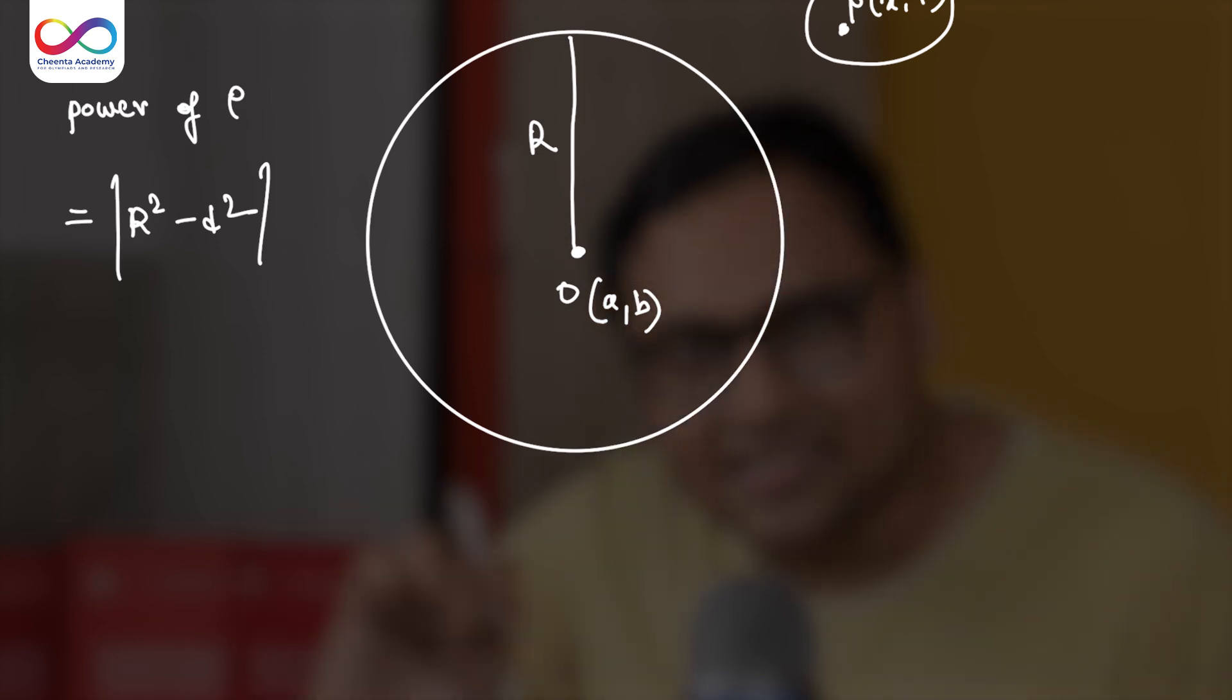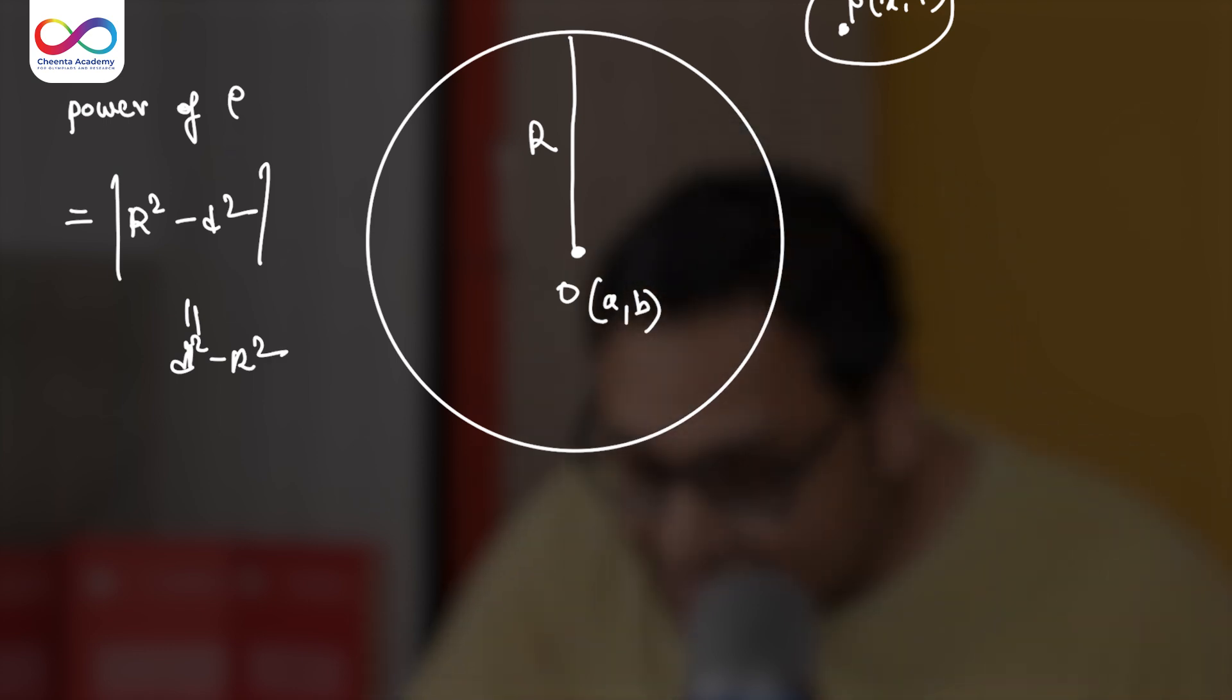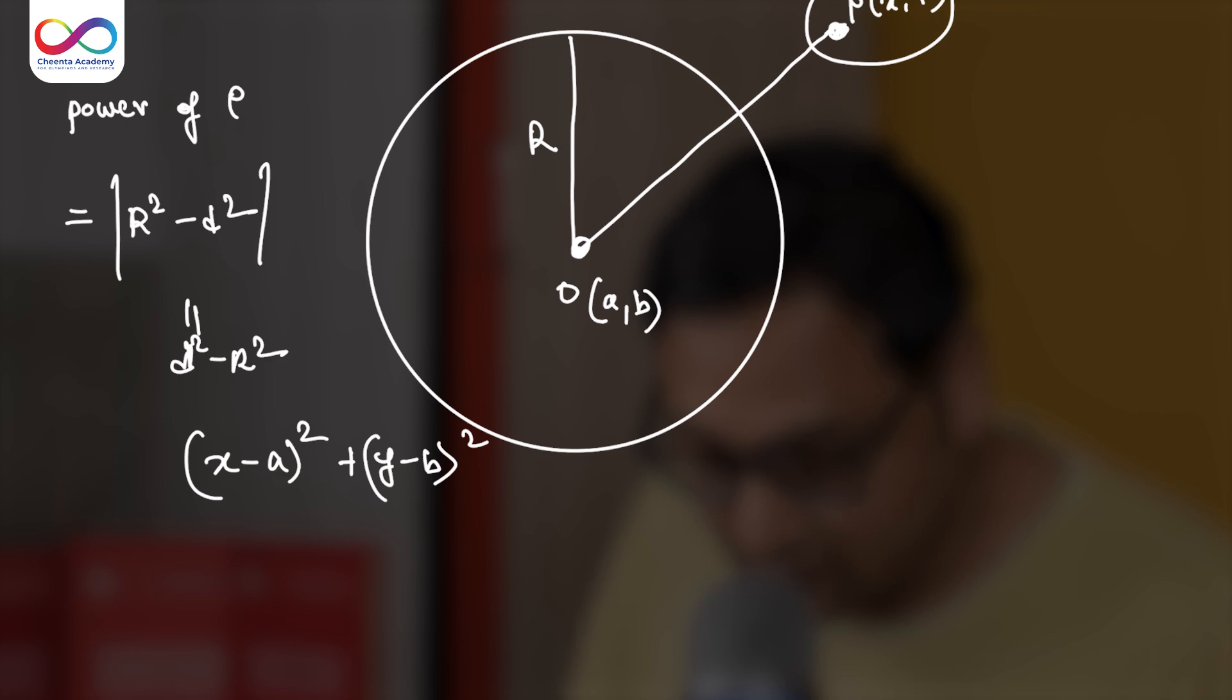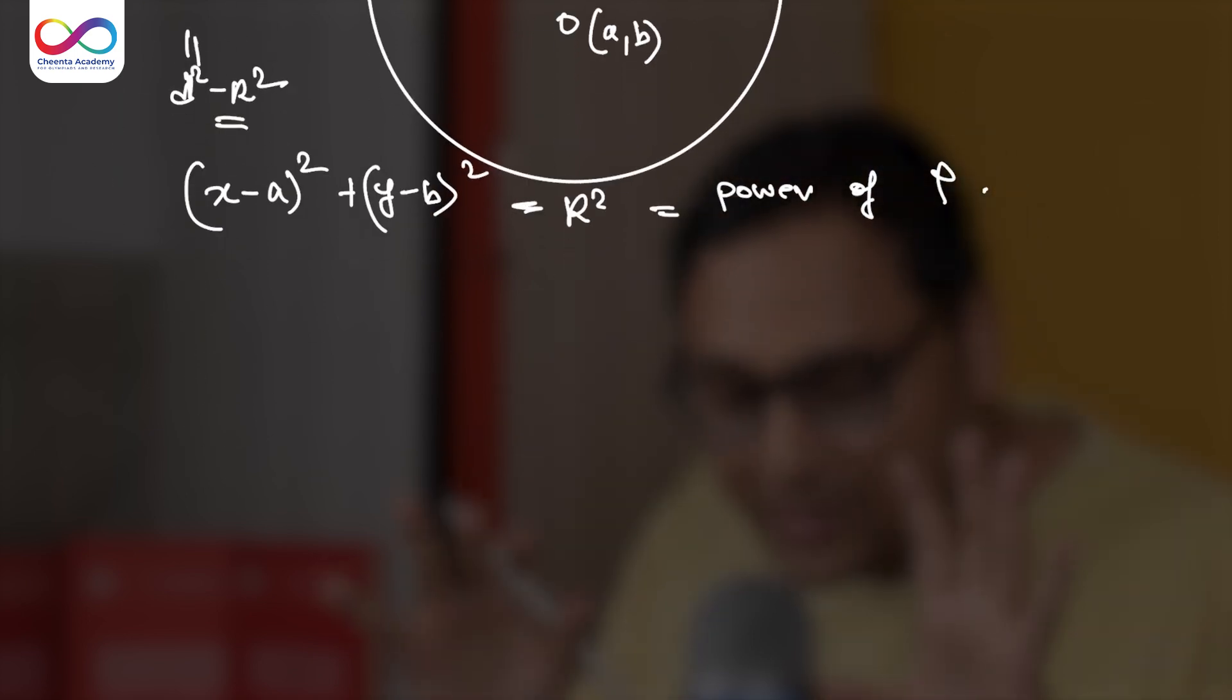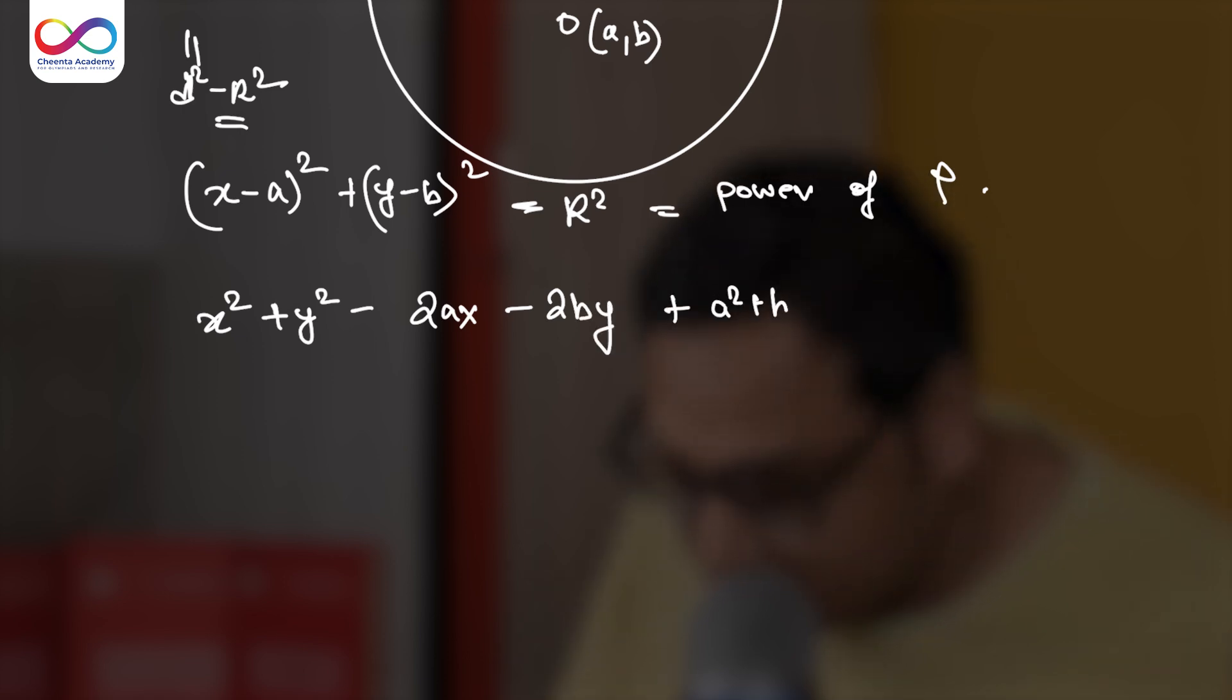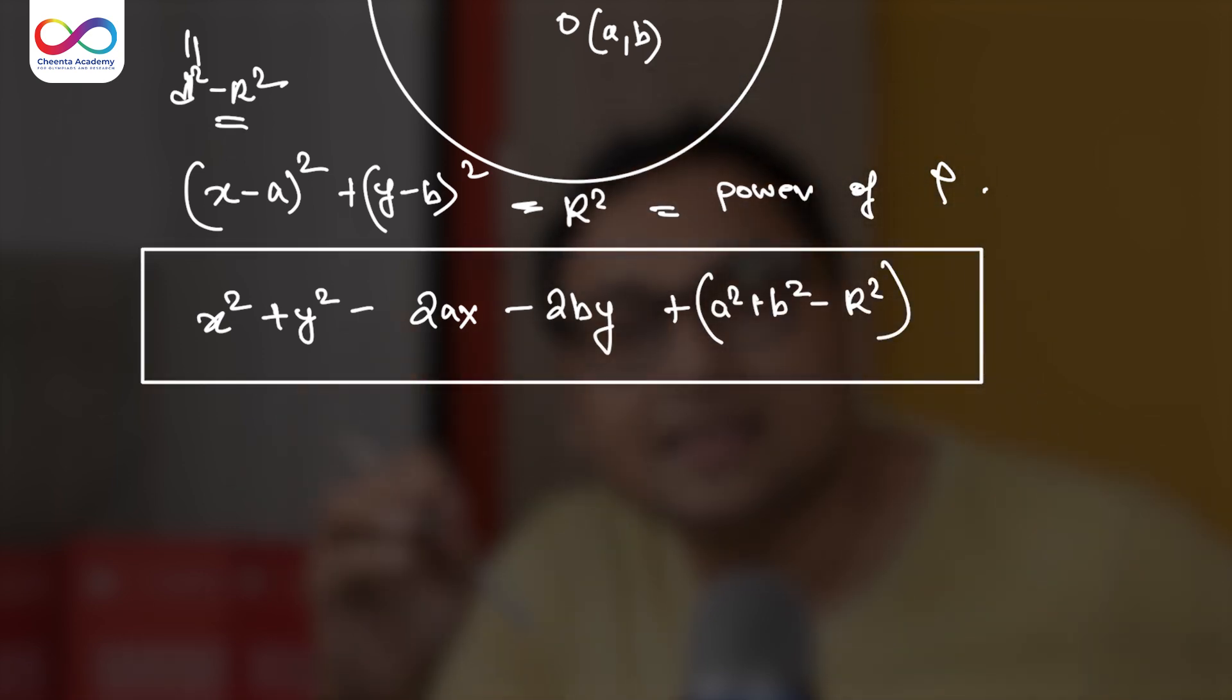We also know that D in this case is bigger, right? So we can write it as D² minus R². Now what is the distance OP? We can use the distance formula. It is (x-a)² + (y-b)². And we have this little minus R² here. So this equals the power of P. So if I simplify it, I will get x² + y² - 2ax - 2by + a² + b² - R². This expression is the power of the point P.